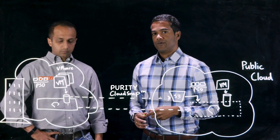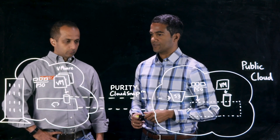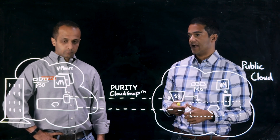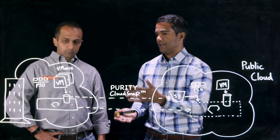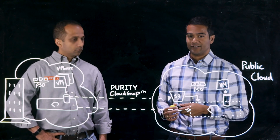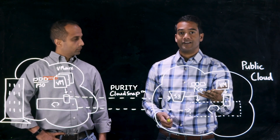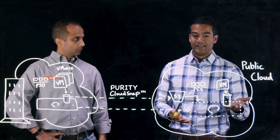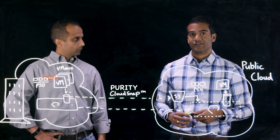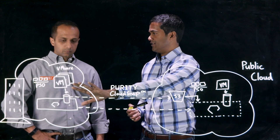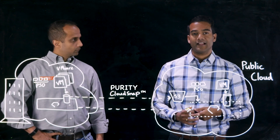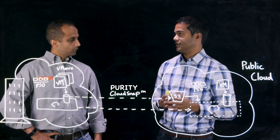That's great. Similarly, with our Pure Service Orchestrator product, which is for containerized applications — whether you're using Docker or Kubernetes — it makes it very easy to use the flash array for those types of applications. And Pure Service Orchestrator is going to run just the same as it does on-prem on top of Cloud Block Store, so that same application that ran on-prem can run in the cloud very easily.